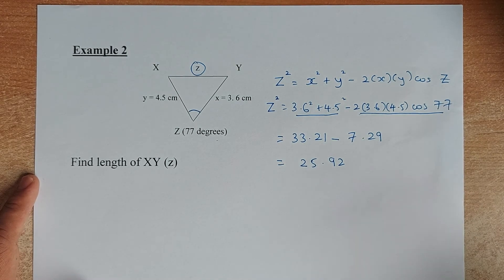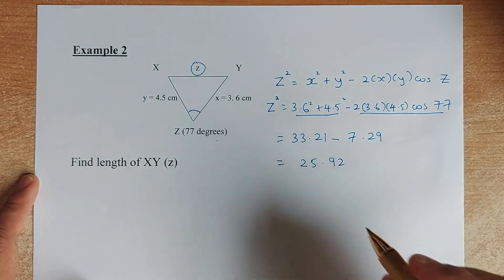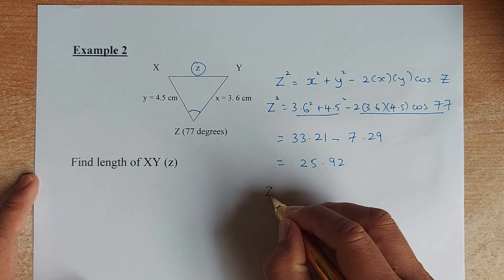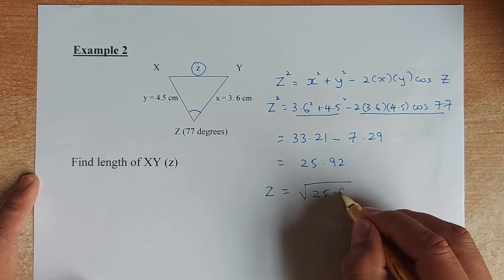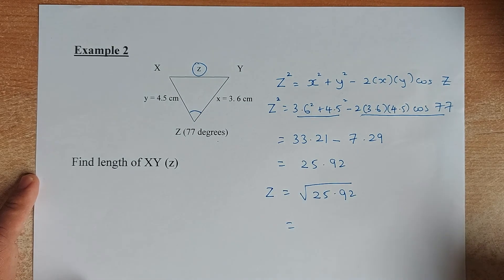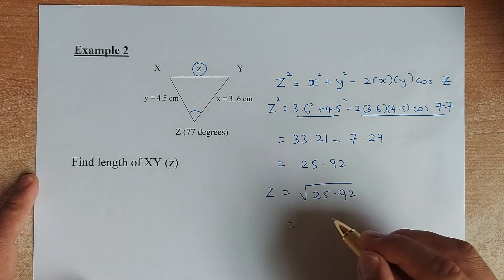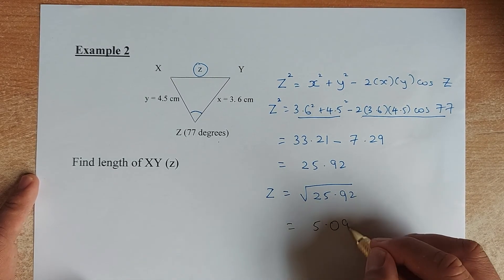Is that the answer? No, because you are interested in z rather than z squared. So you need to square root the answer. The z is the square root of 25.92. Put in your calculator, the square root of 25.92 comes up to 5.09 centimeters.